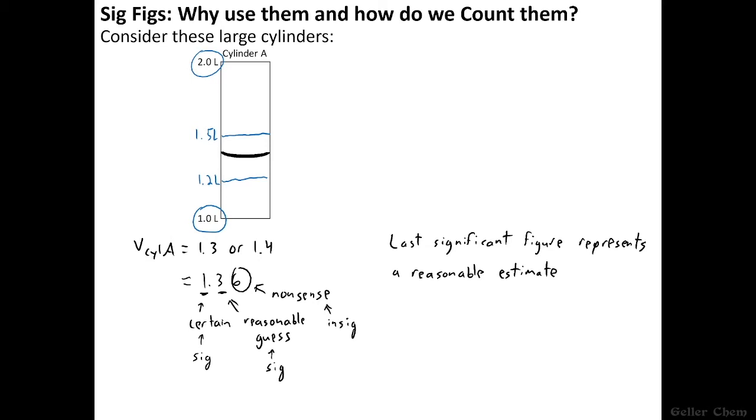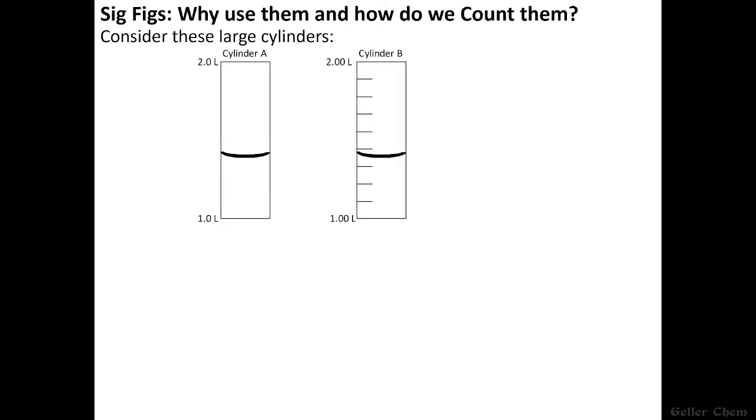Now I'm going to clear some space and bring in another cylinder and get deeper into this concept. Now, here we have a cylinder of the exact same size as cylinder A, and our liquid is at the exact same level, but we can now estimate the volume much better, because we can see that this cylinder has more lines dividing the measurements. Each of these lines represents a tenth of a liter. And so now it actually becomes quite reasonable to estimate the volume of liquid in this cylinder as being 1.36, because now the 1 and the 3 are certain, and the 6 becomes the reasonable estimate.